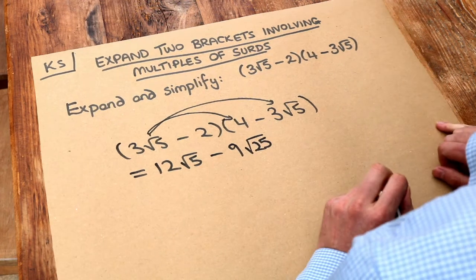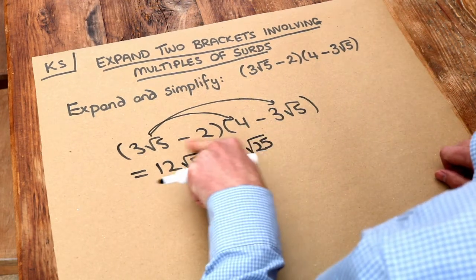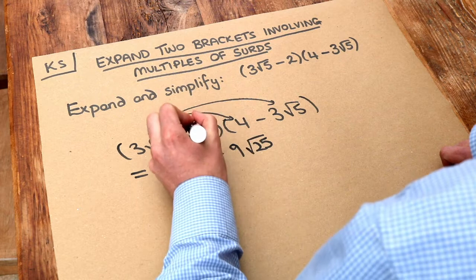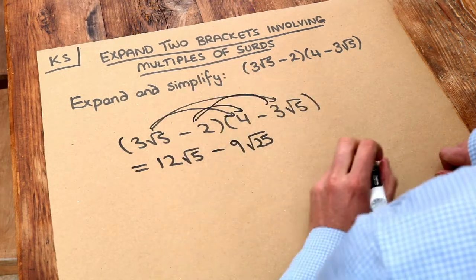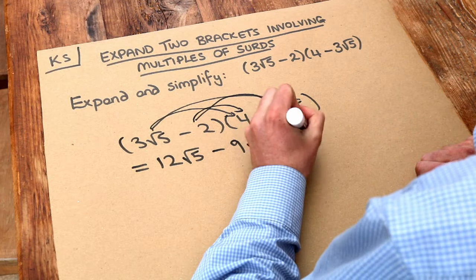And then we do the second thing in this first bracket multiplied by each of the things in the second. So we do the minus two times four, which is minus eight.